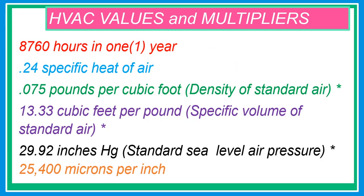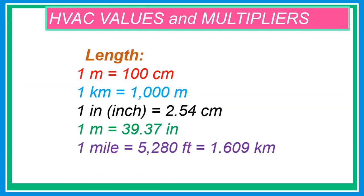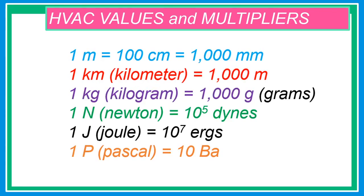8,760 hours in one year. 0.24 specific heat of air. 0.75 pounds per cubic foot density of standard air. 13.33 cubic feet per pound specific volume of standard air. 29.92 inches of mercury — standard sea level air pressure. 25,400 microns per inch. Length conversions: 1 meter equals 100 cm; 1 kilometer equals 1,000 meters; 1 inch equals 2.54 cm; 1 meter equals 39.37 inches; 1 mile equals 5,280 feet; 1 meter also equals 1,000 millimeters; 1 kilogram equals 1,000 grams; 1 newton equals 10 to the 5th dynes; 1 joule equals 10 to the 7th ergs.